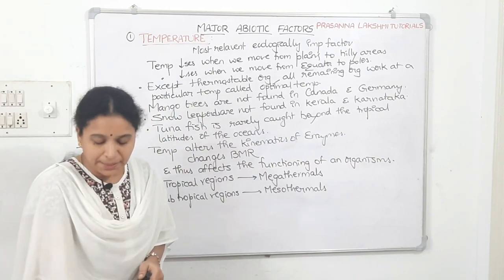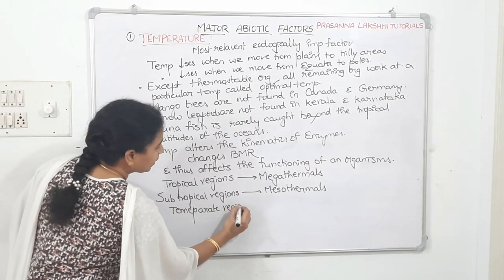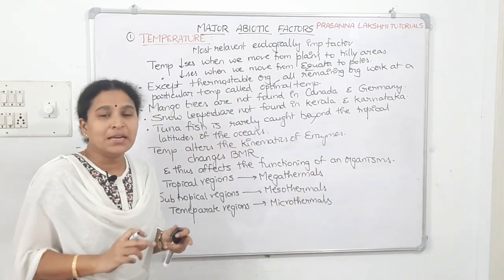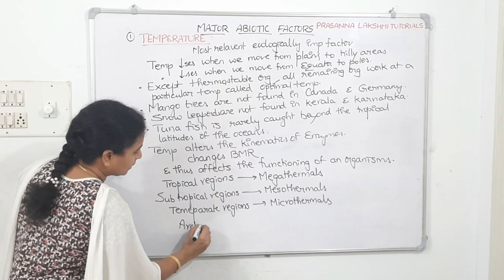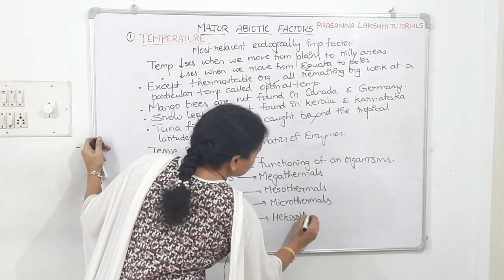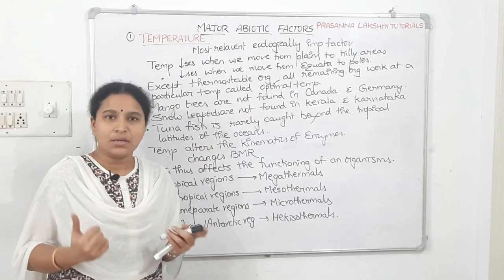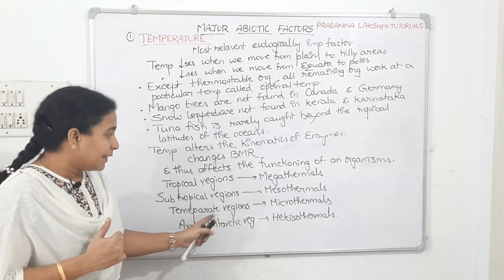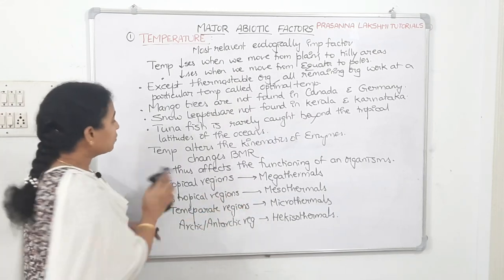Organisms growing in temperate regions are called microthermals, and organisms growing in Arctic and Antarctic regions are called hecothermals. We can also broadly classify organisms into eurythermals or stenothermals, instead of using the zone-specific names.